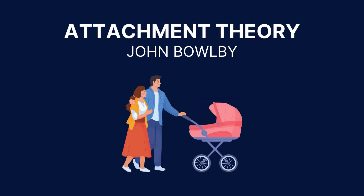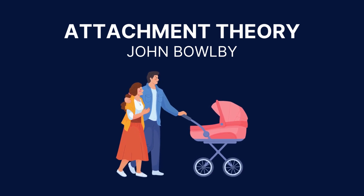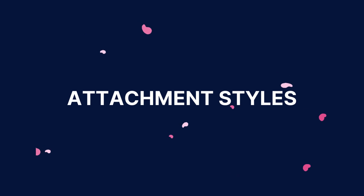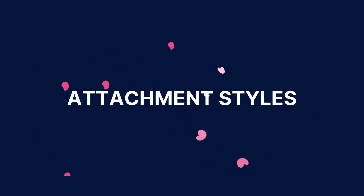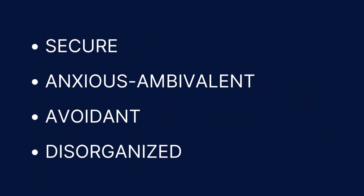John Bowlby's attachment theory proposes that infants develop emotional bonds with their primary caregiver, which serves as a foundation for their later social and emotional development. It identifies four different attachment styles that develop based on the quality of the relationship between the infant and their caregiver during the first few years of life: secure, anxious, ambivalent, avoidant, and disorganized.